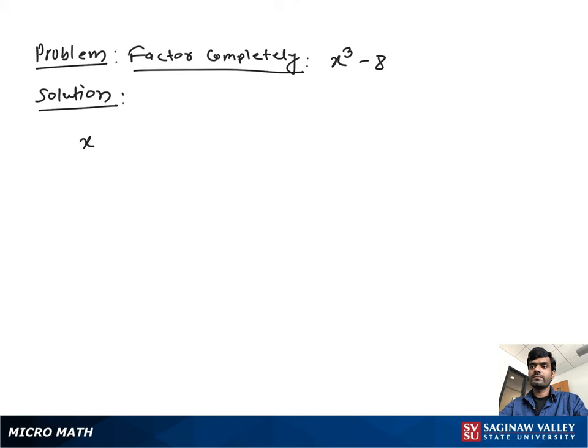Factor completely: x³ minus 8. If we look at it, it appears to be in cube form. So we can write it as x³ minus 2³.